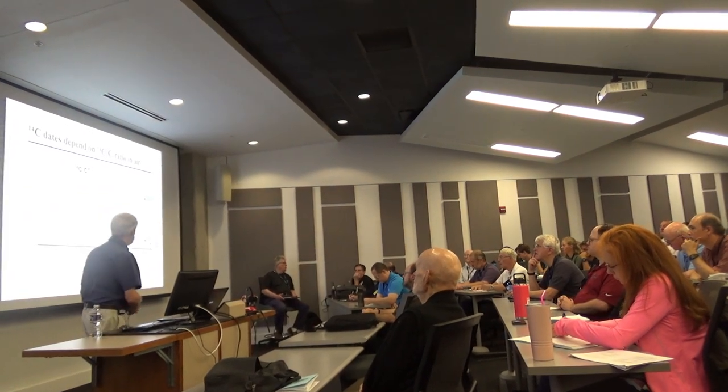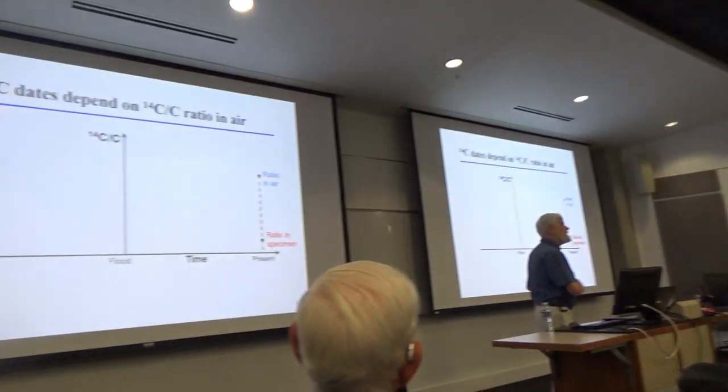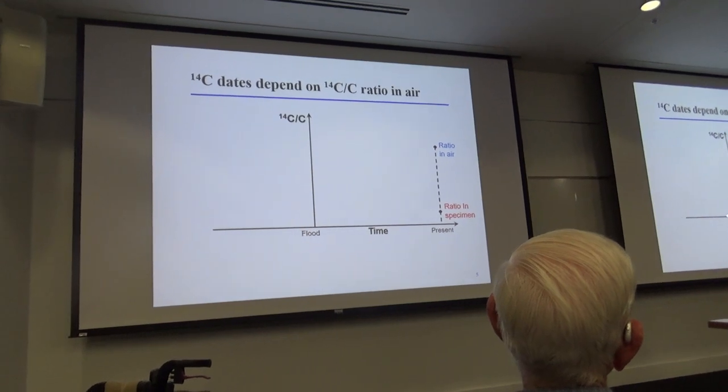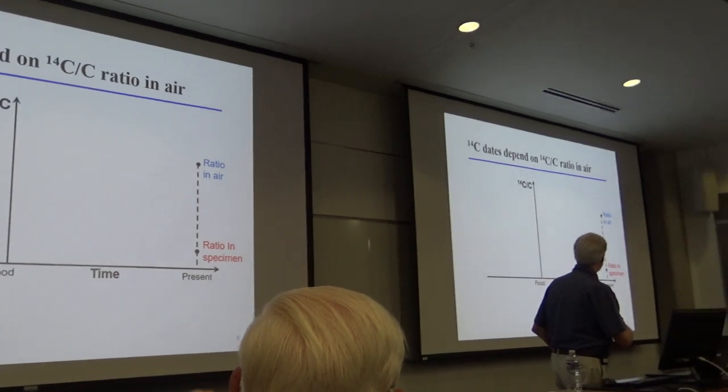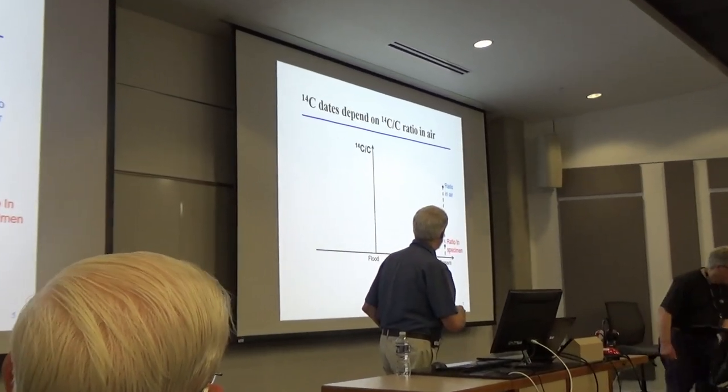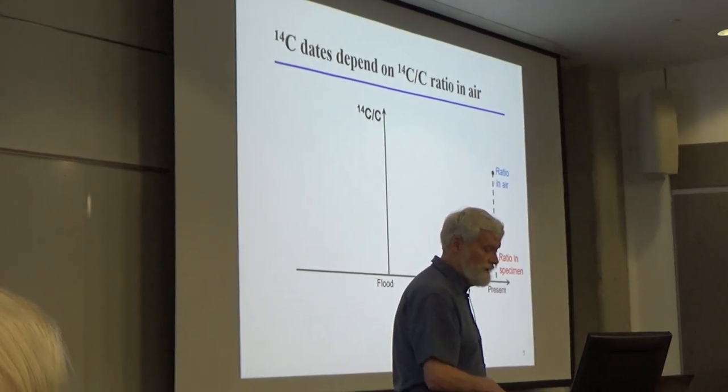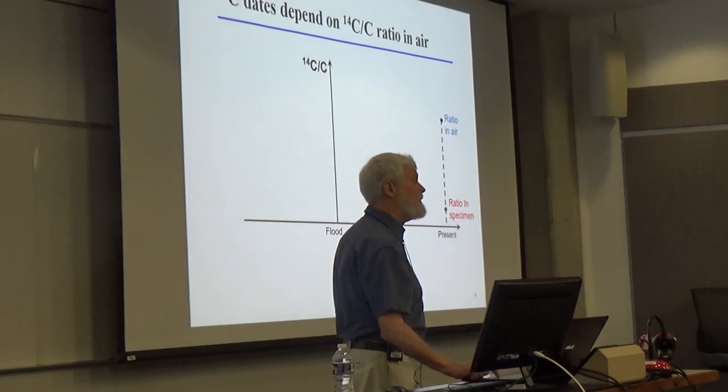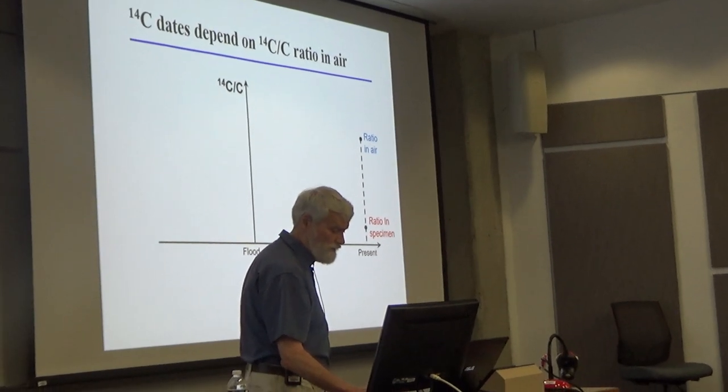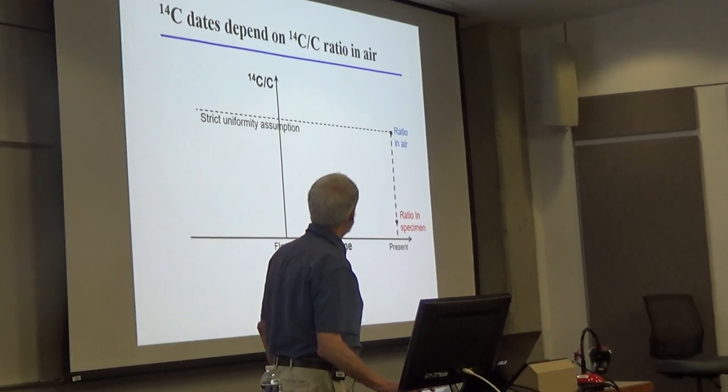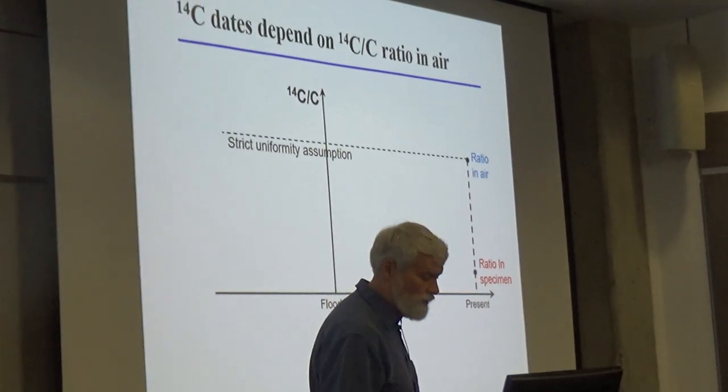Now, I'm going to show you a graph, and I'll show it to you in brief now, and near the end of the talk, I'll walk through again. But here's time, here's the present time, here's the time of the flood, here's that ratio, carbon-14 to regular carbon. And the ratio in air today is here. So if you were a strict uniformitarian and thought that that ratio has never changed throughout all time, then you would draw this line back here. But even the uniformitarians don't do that.